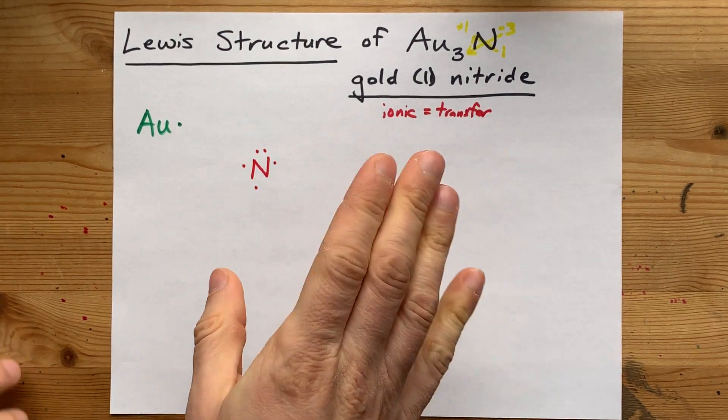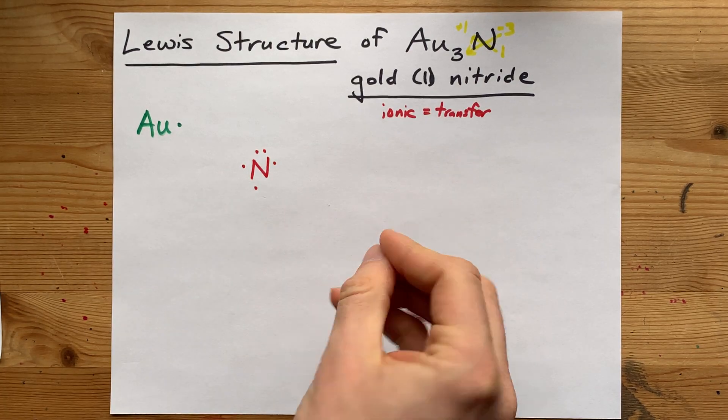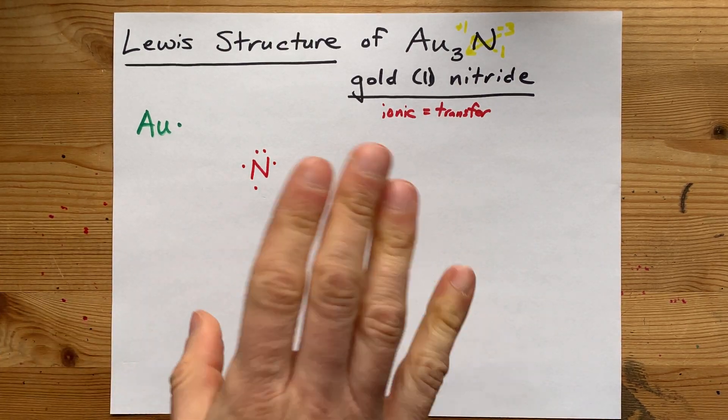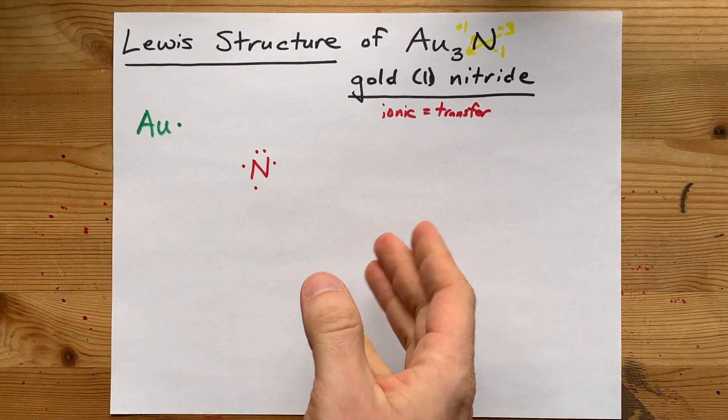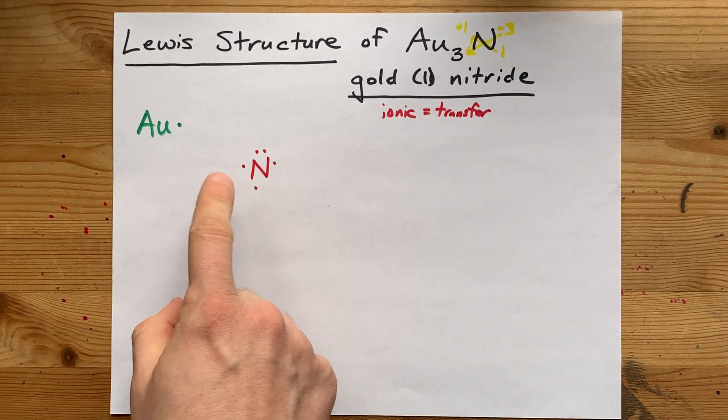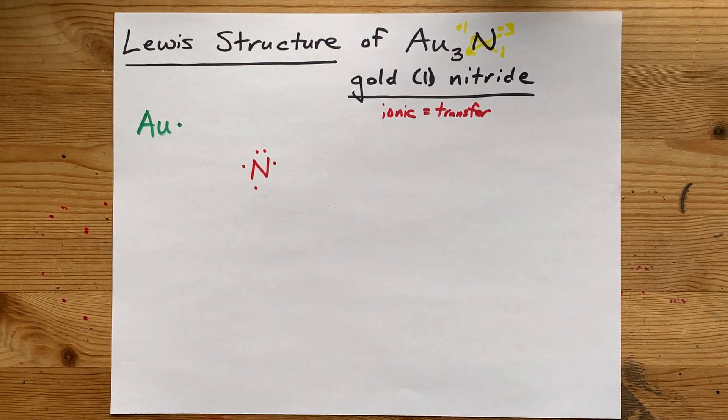Now, the trick behind this is that nonmetals want a complete octet of eight electrons in their outer shell. That's called the octet rule. And here, nitrogen has five already. It needs three more to complete its octet.